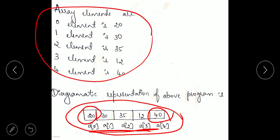If you want to fetch values 20, 30, 35, 12, and 40, you use a[index number] — for example, a[0] prints 20 and a[4] prints 40. In the next video we are going to see one more example.